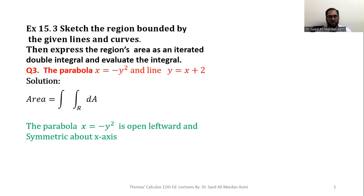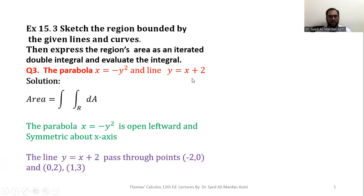In order to plot the region, first we must know what this parabola looks like. The parabola x = -y² opens leftward and is symmetric about the x-axis. The line y = x + 2 is a general line.